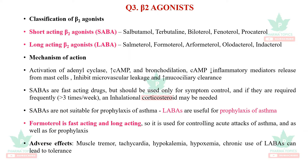The mechanism of action of beta-2 agonists: they activate adenyl cyclase, increase cyclic AMP, and cause bronchodilation. Cyclic AMP additionally reduces the release of inflammatory mediators from mast cells and improves mucociliary clearance. SABAs are fast-acting drugs used only for symptom control. If a patient requires them more than three times per week, this indicates the need for additional inhalational corticosteroids.